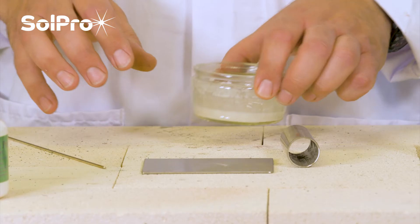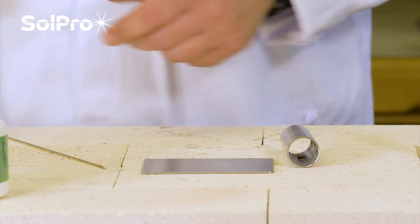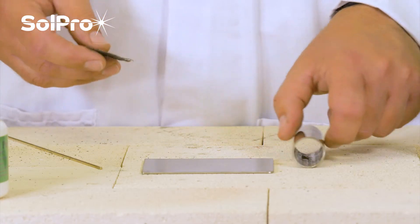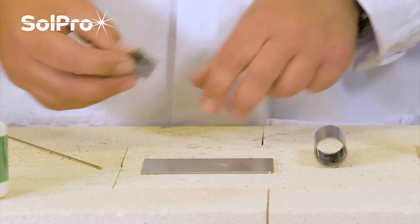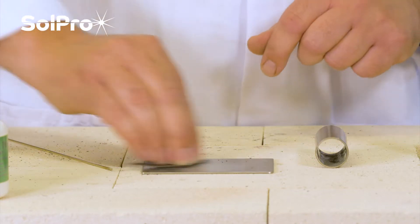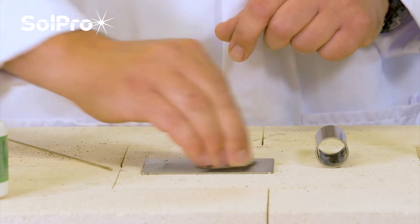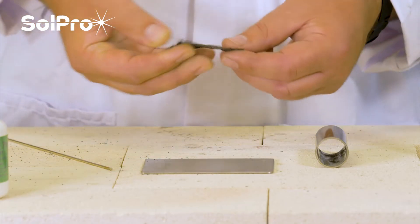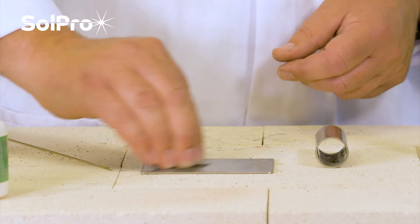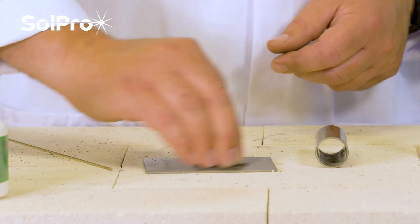Before we start the brazing process, like all good practice, we have to make sure we get both the parts nice and clean. We're going to use a bit of emery here just to make sure that we get rid of any oxides, any greases, any contaminants on the surface that will prevent the brazing alloy sticking. Doing it with emery also gives it a nice key for the brazing alloy to stick to.